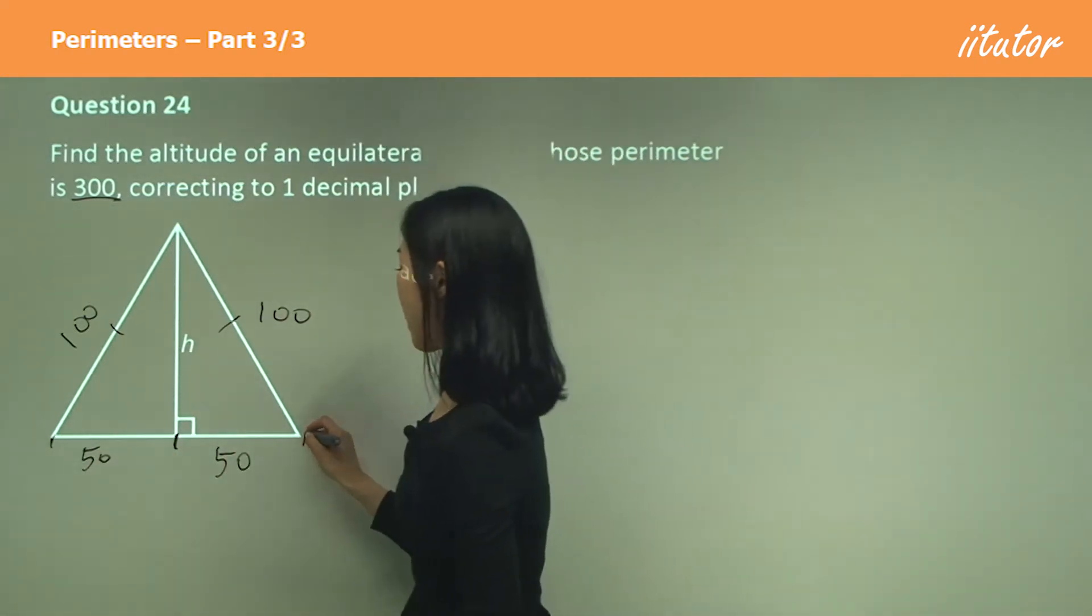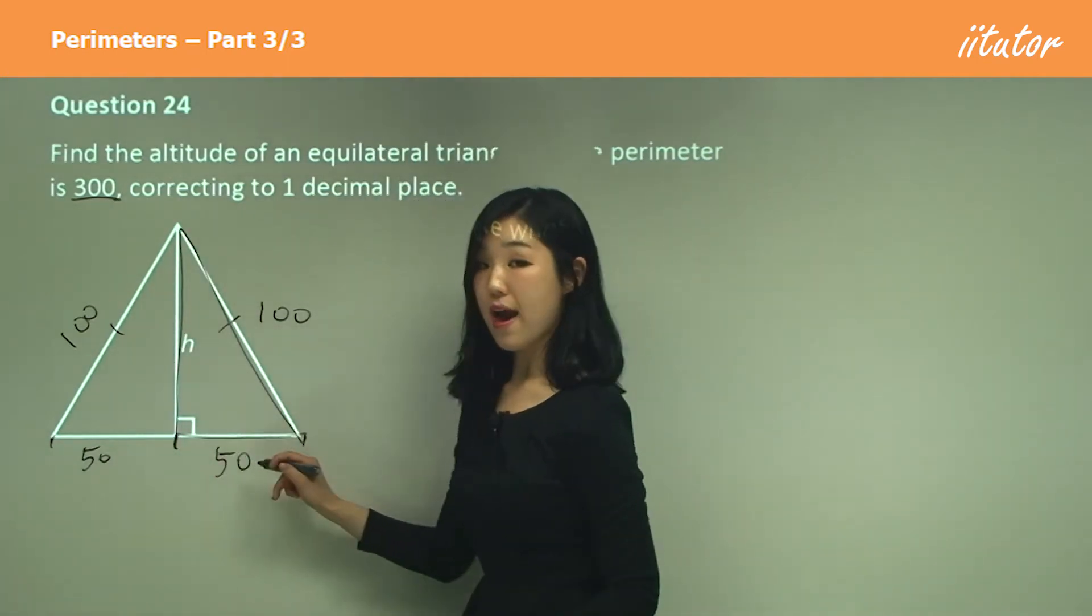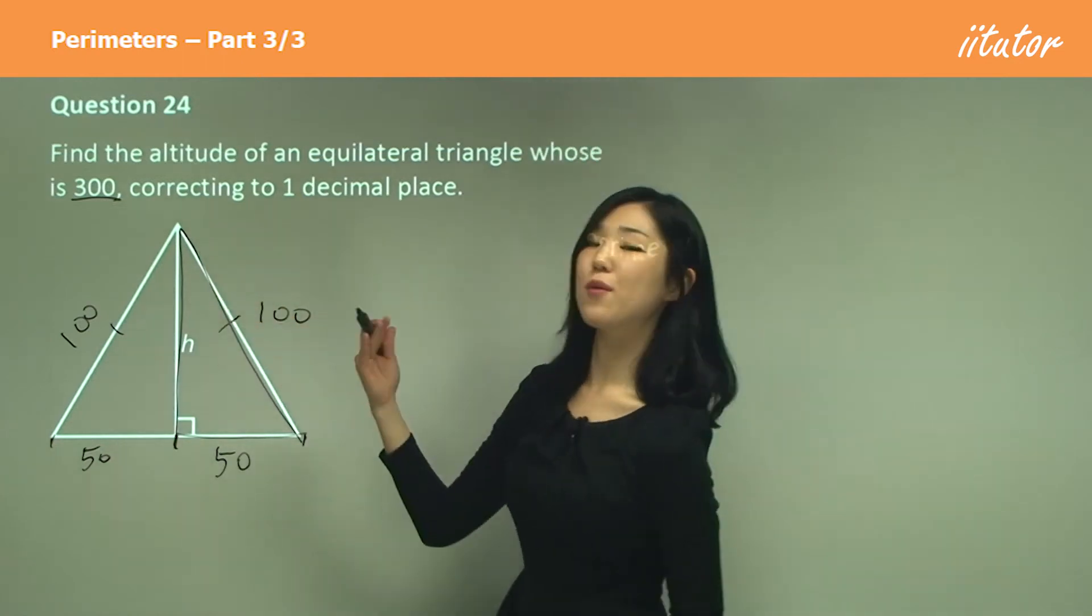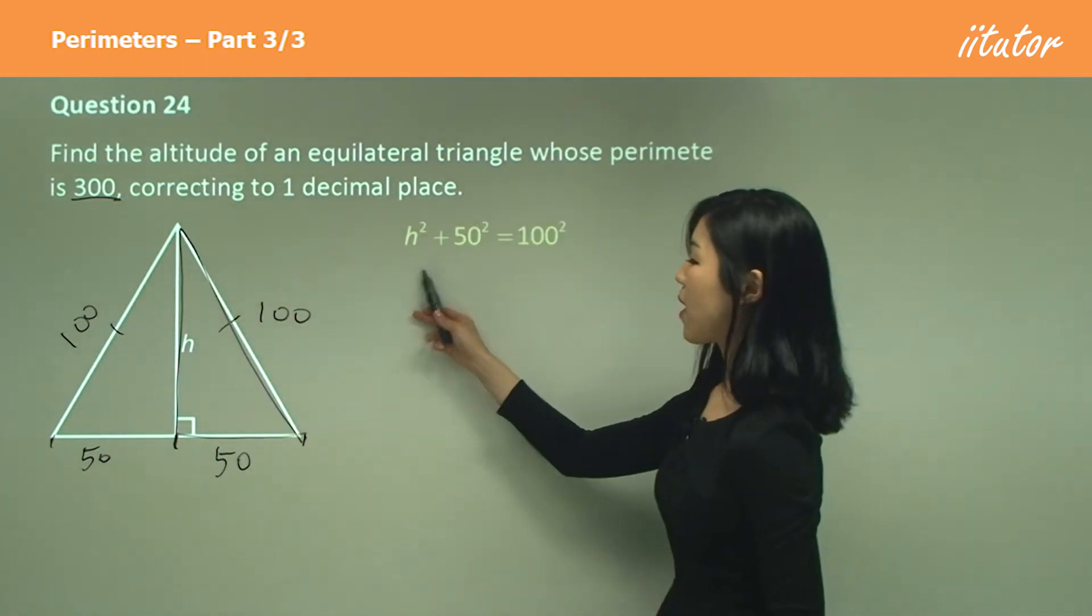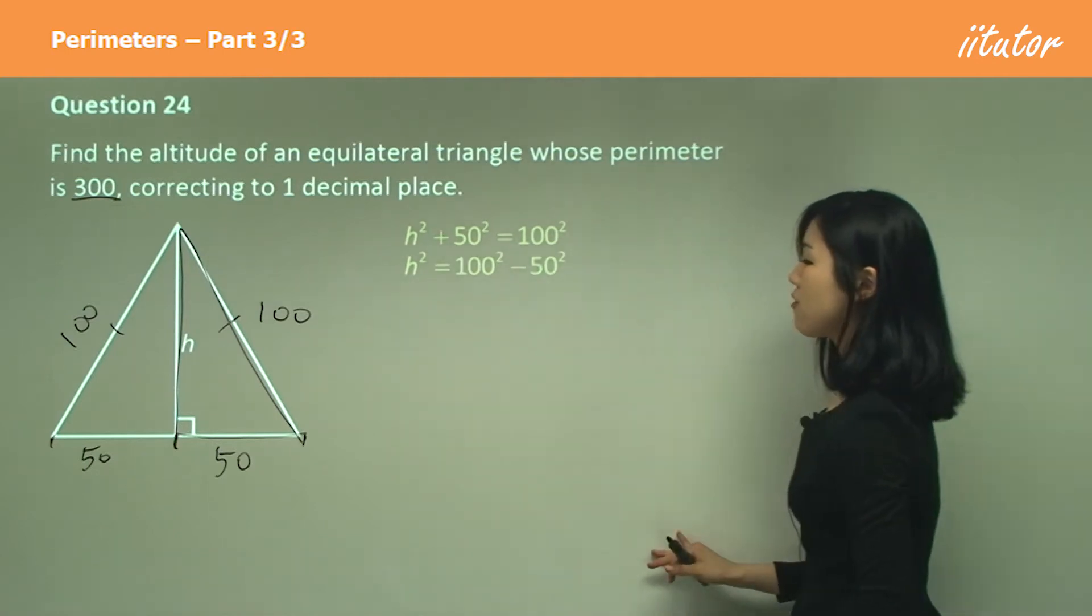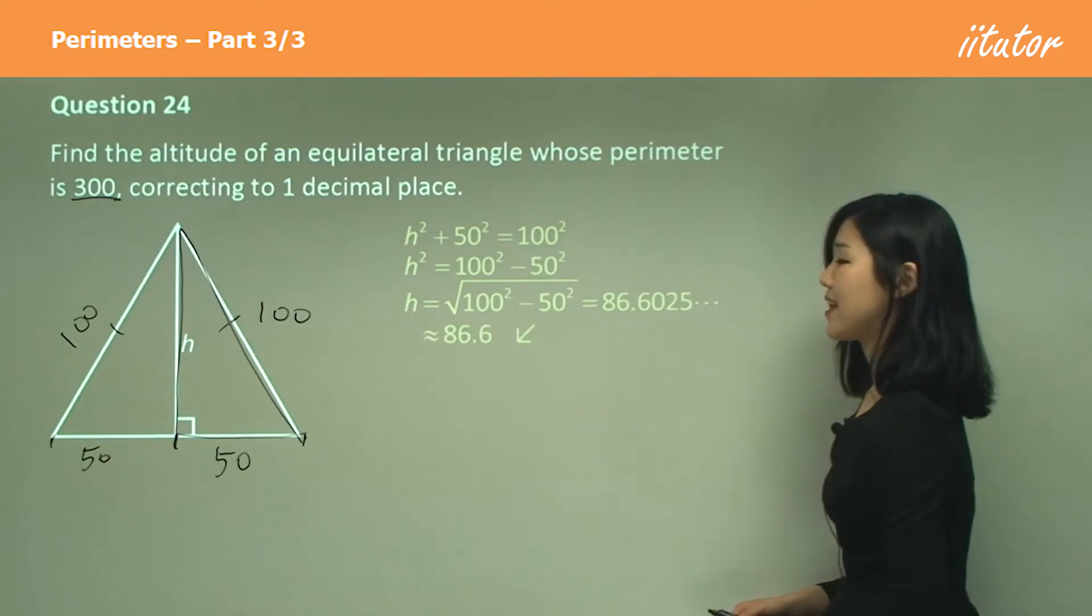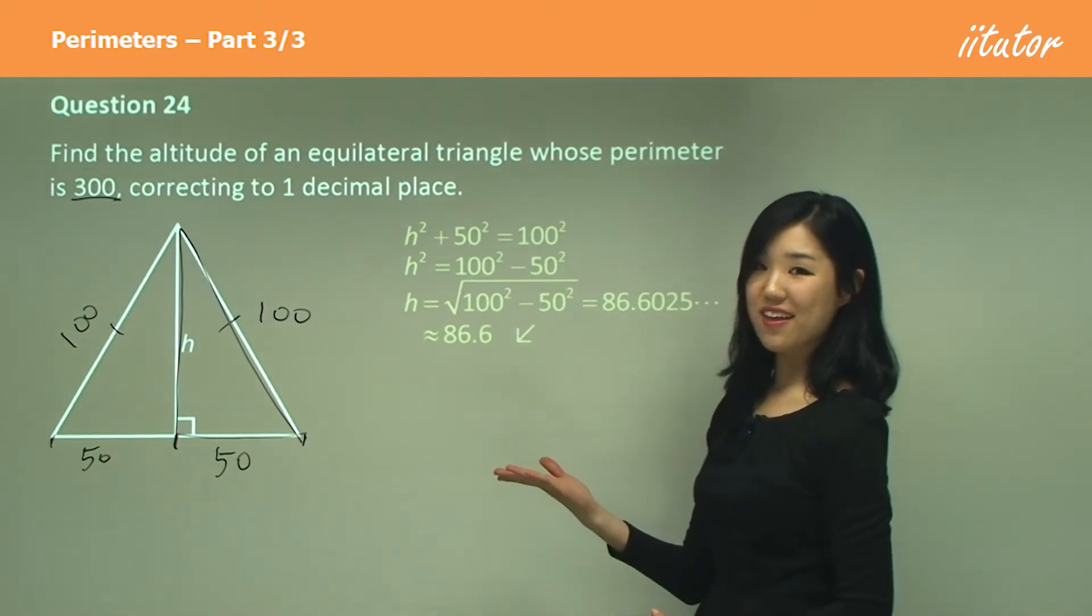So you can now look at this right angle triangle. We've got one of the adjacent sides and the hypotenuse, so now we can solve for h. h squared plus 50 squared equals 100 squared. Move the 50 squared over, square root, calculate, and to one decimal place it's 86.6.